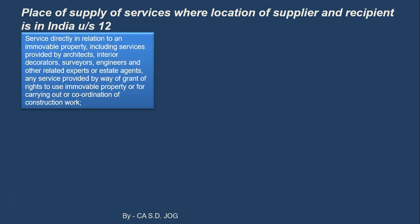The first case covers services directly in relation to an immovable property, such as land, building, etc. This includes services provided by architects, interior decorators, surveyors, engineers, other related experts, or estate agents. It also covers any services provided by way of grant of rights to use immovable property, or for carrying out coordination of construction work. So letting off immovable property and coordination of construction work are also covered under this clause.